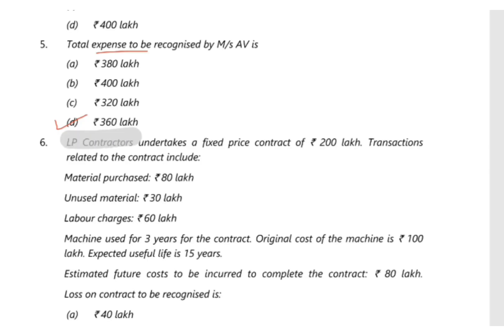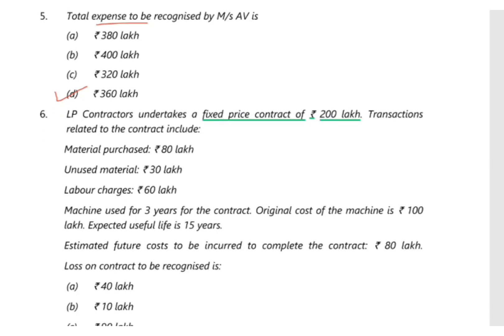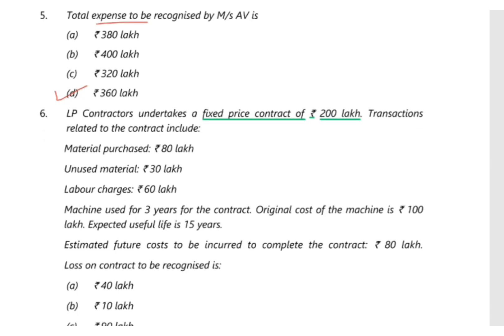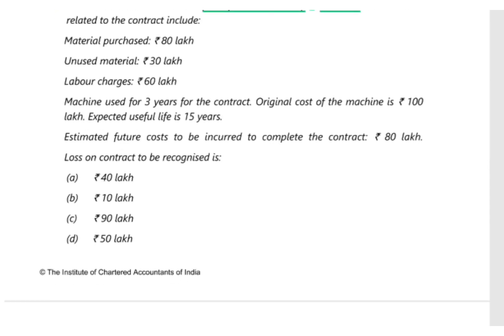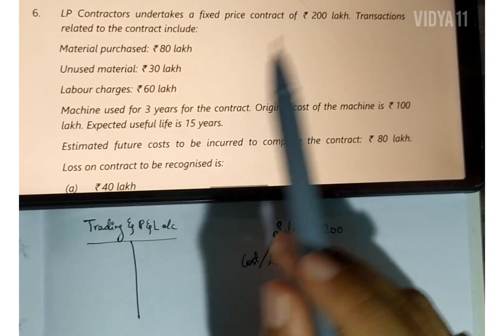LP Contractors undertake a fixed price contract of 200 lakh. Transactions related to the contract include: material purchased 80 lakh expense, unused material closing stock 30 lakh, labor charges 60 lakh, and machine used for three years with original cost 100 lakh and expected useful life 15 years — from which we calculate depreciation expense. Estimated future cost to complete the contract is 80 lakh. We need to find the loss on contract to be recognized.